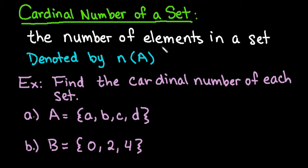Hi, for this video what I want to do is talk to you about the cardinal number of a set. The cardinal number is simply the number of elements in a set and it's denoted by n in front of parentheses where a set is inside. So a just represents any set a.